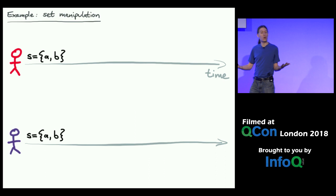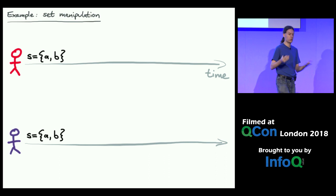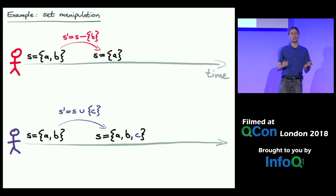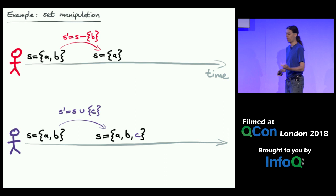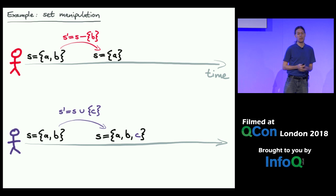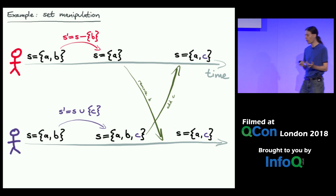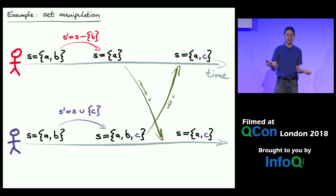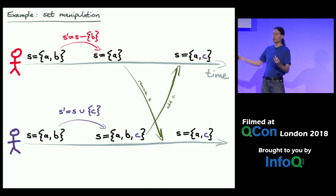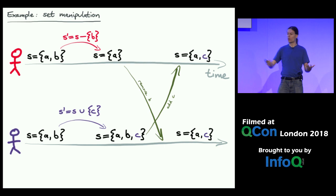We're not limited to only text documents. Consider a set — an unordered collection of elements. The red user removes item B from the set {A, B}, leaving only A. Concurrently the purple user adds a new element C. As those changes propagate, we can define a sensible merged outcome: A was not touched, B was removed, C was added. So the final merged state contains A and C.